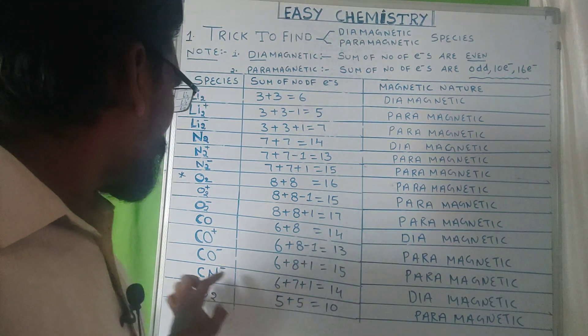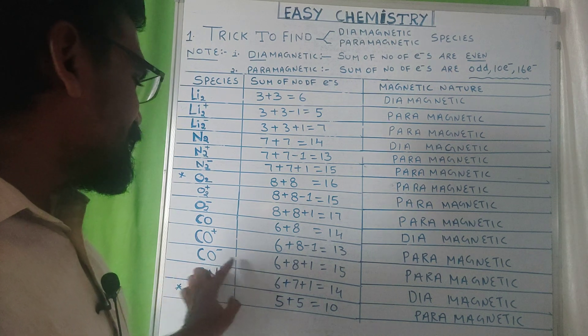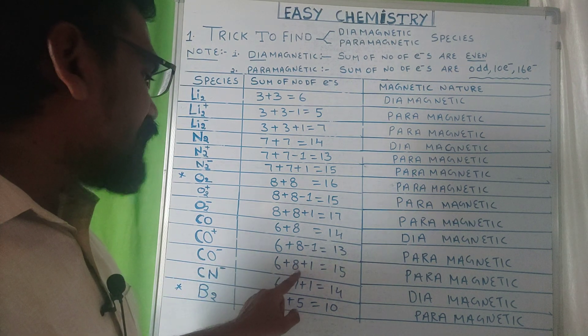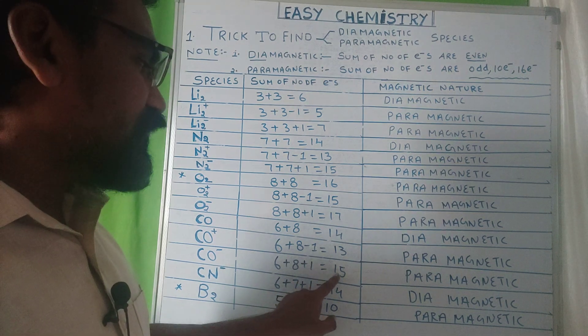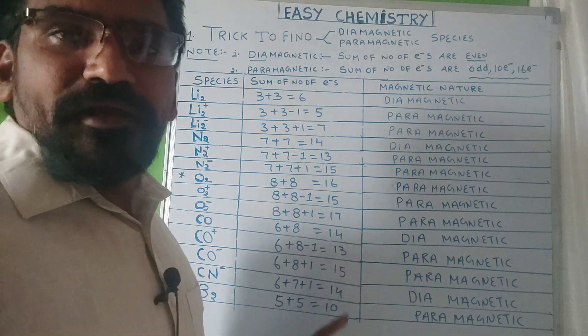Paramagnetic nature. CO minus: carbon 6, oxygen 8, plus 1 electron equals 15, paramagnetic nature.